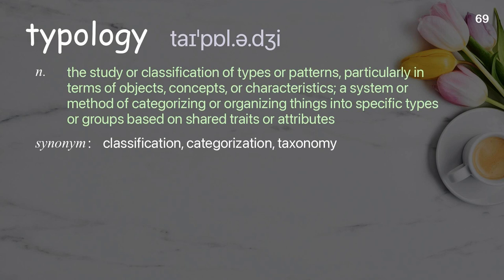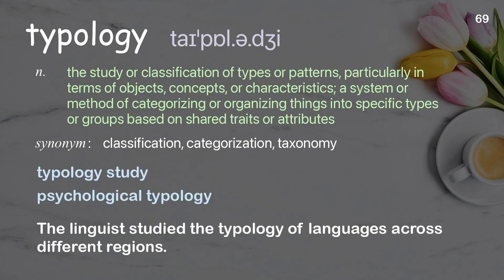Typology: the study or classification of types or patterns, particularly in terms of objects, concepts, or characteristics; a system or method of categorizing or organizing things into specific types or groups based on shared traits or attributes. Examples: typology study; psychological typology; the linguist studied the typology of languages across different regions.